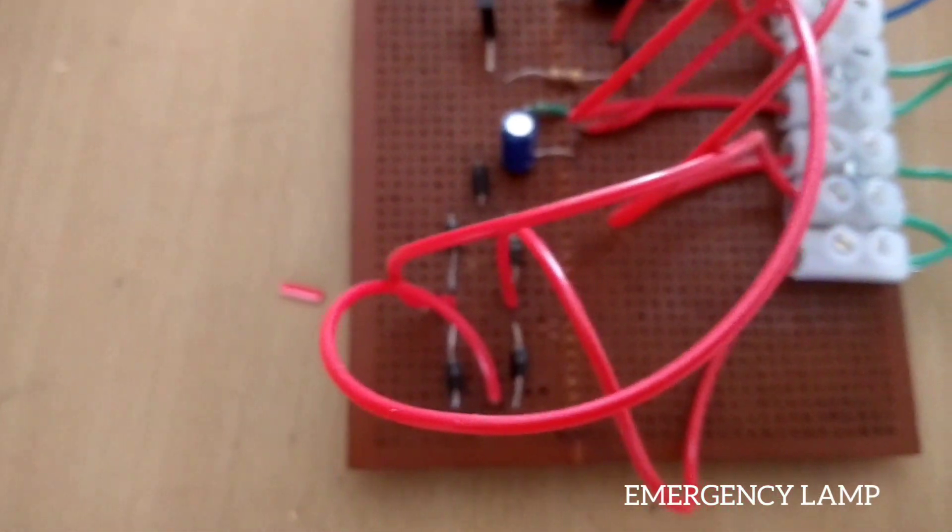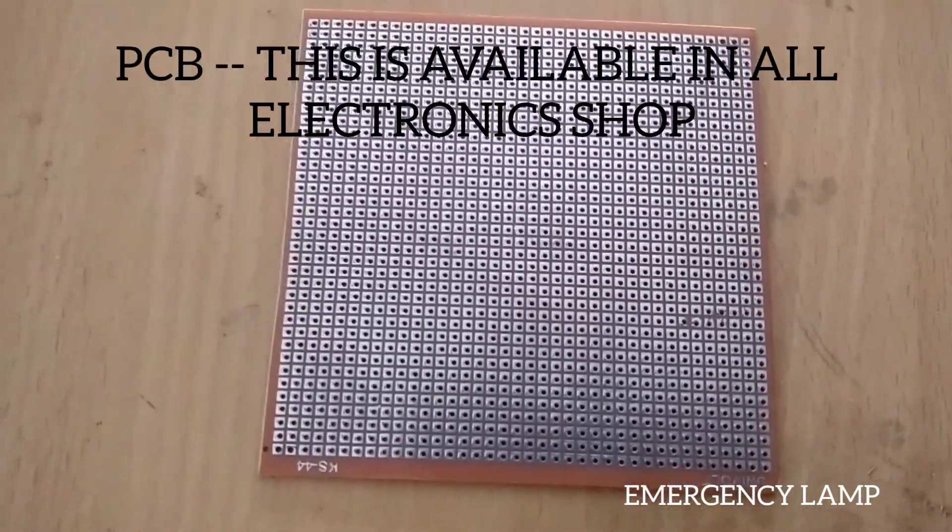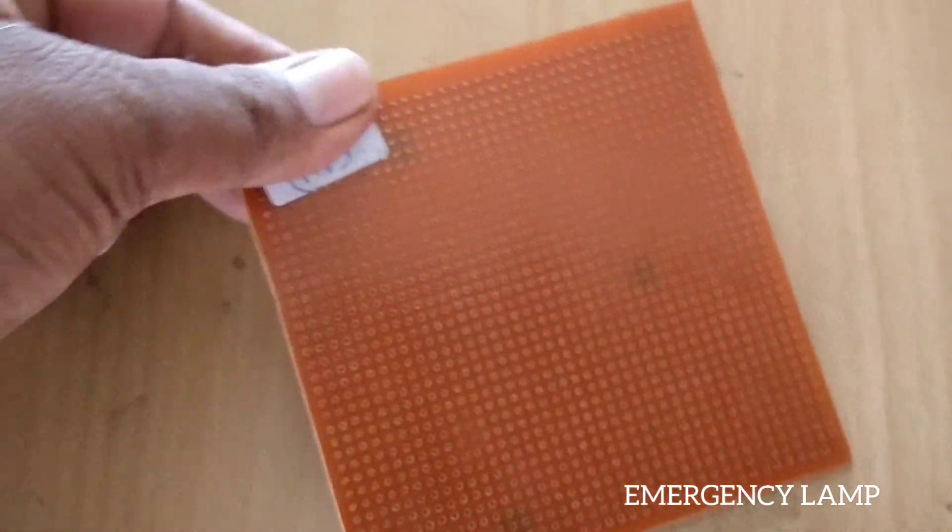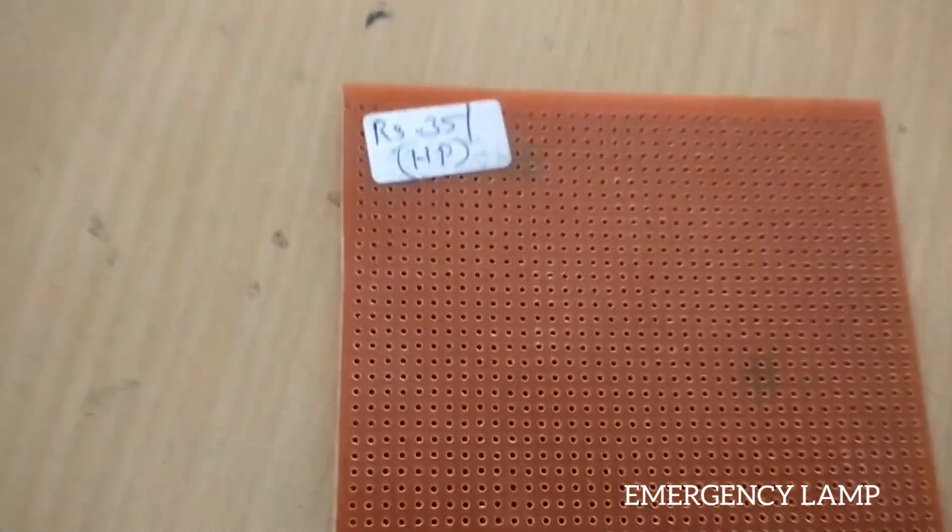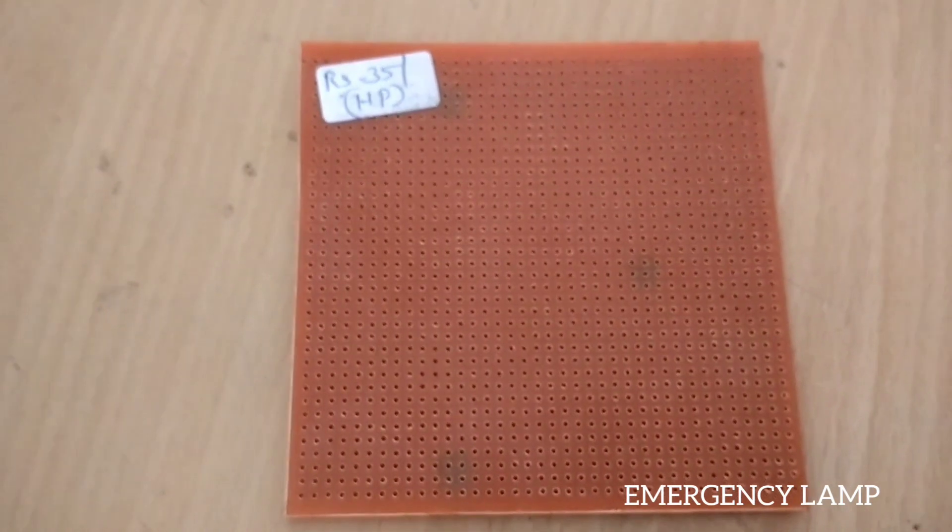See the PCB. The PCB will be like this. You can see the price also, it is only 35 rupees, 4 into 4.